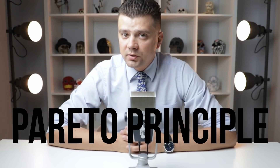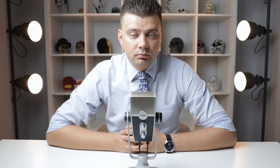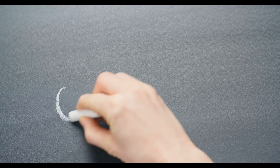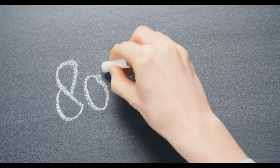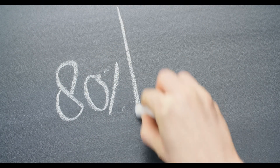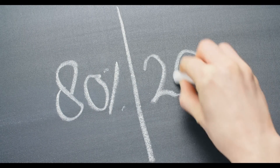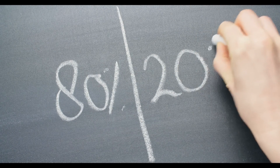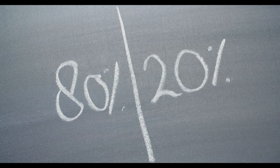What is the Pareto Principle and who is Pareto? The Pareto Principle's definition is very simple: 80% of effect comes from 20% of effort. And it's opposite: 20% of effect comes from 80% of effort.